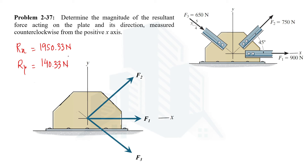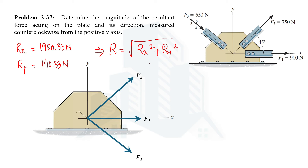Now that we have the x and y components of the resultant force, the magnitude can be calculated using the formula from the basics of composition of forces: R = √(Rx² + Ry²). Substituting the values of Rx and Ry, we get the magnitude of the resultant force as 1955 N.